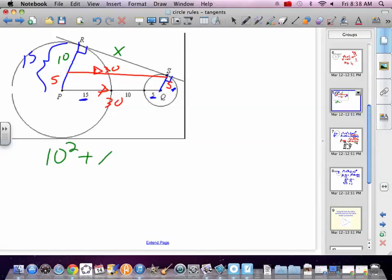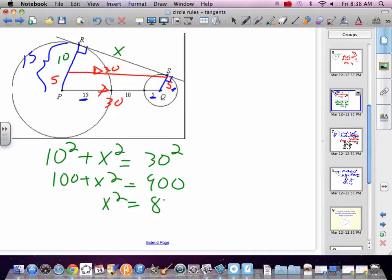Well I've got 10, I've got 30, and I've got something I don't know. And I've got a right angle. Looks like a right triangle to me. Awesome. 10 squared plus x squared equals 30 squared. 100 plus x squared equals 900. Subtract 100, x squared equals 800. So x will equal the square root of 800. And if you had to calculate it, you'd crunch it out.